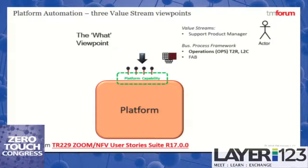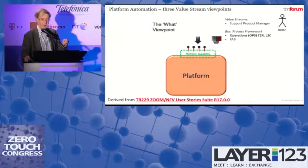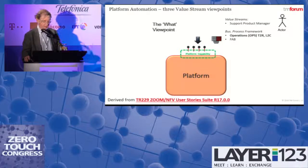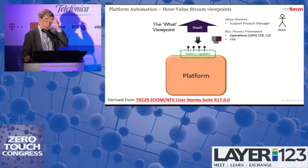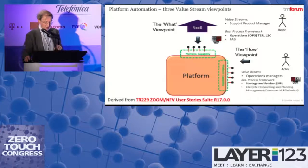There are three value-stream viewpoints for platforms. The 'what' view covers what the platform does — for example, manage connectivity services or vCDN services — capabilities that fundamentally support the product manager's ability to deliver tenant services or instances of these services to customers. These capabilities effectively support the operations side of our Business Process Framework.